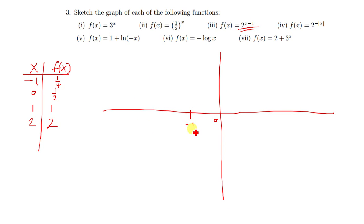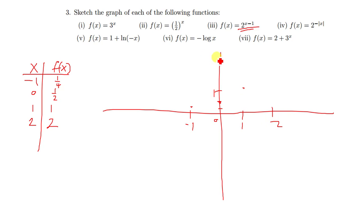We sketch this one here. We have negative one comma one-quarter, zero comma one-half, one comma one, and two comma two. Our curve will eventually come out like that — just as simple as this. These graphs are very simple, you don't have to stress when drawing them.